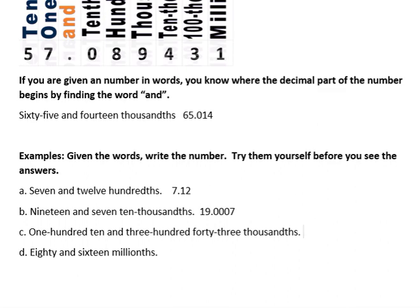This one, 110 and, so 110 and, that's your decimal point. Three hundred forty-three thousandths. Three hundred forty-three takes three spots to write, three, four, three. And thousands is three places out, so no zeros in this, just three, four, three.